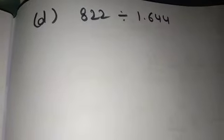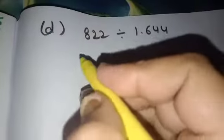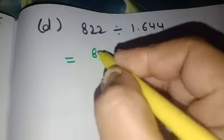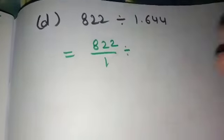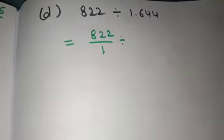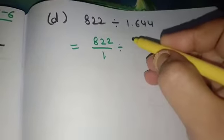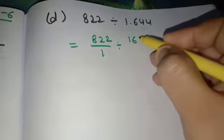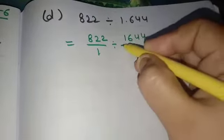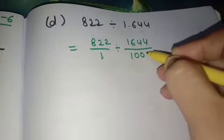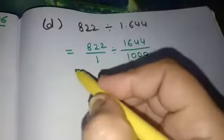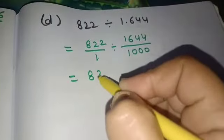Come to the D part of the question. 822 can be written as 822 by 1 divides 1.644. Decimal will be removed and this number will be 1644 by 1000. Now division sign will be converted to multiplication.